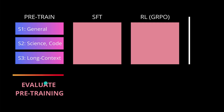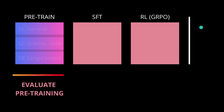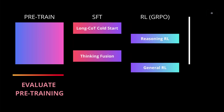Having evaluated the resulting pre-trained model, they then addressed how to implement the dynamic switch of thinking and non-thinking mode. The solution published by QwQ3 starts with supervised fine-tuning using a long chain-of-thought cold start, then GRPO for reasoning reinforcement learning, then the important thinking fusion step between reasoning and non-reasoning, and finally a general reinforcement learning GRPO implementation.